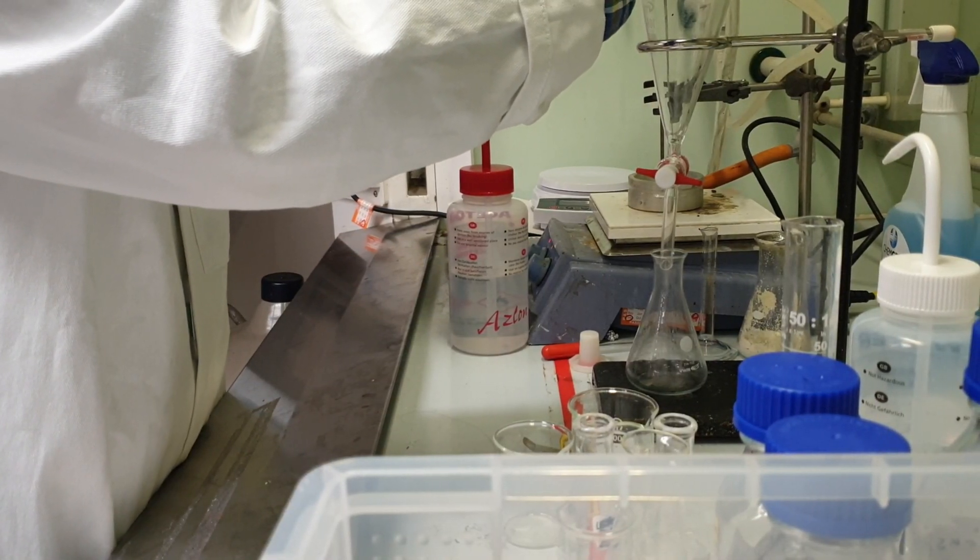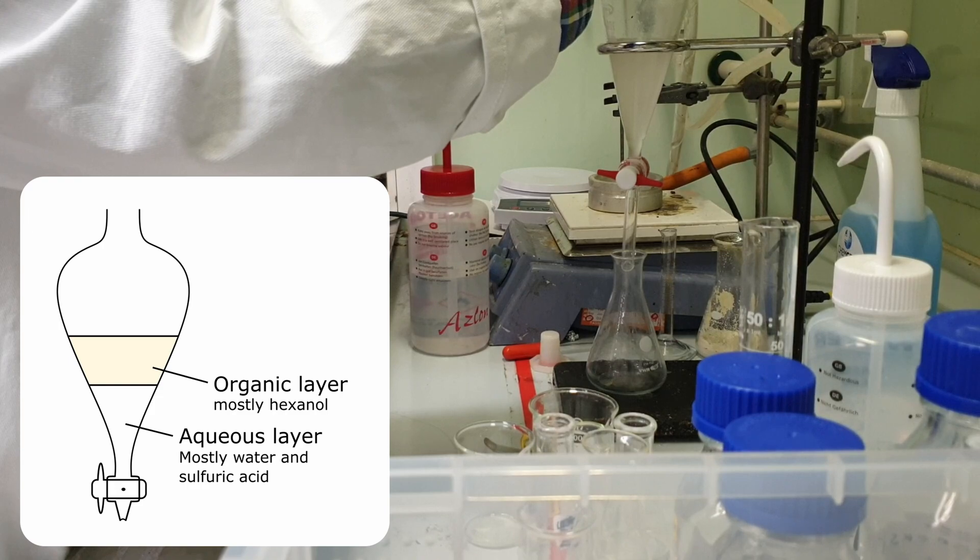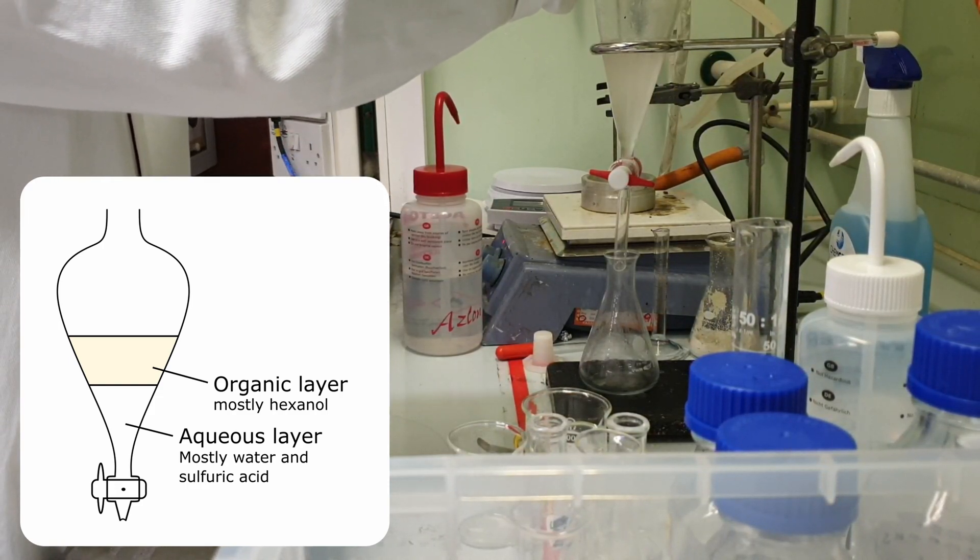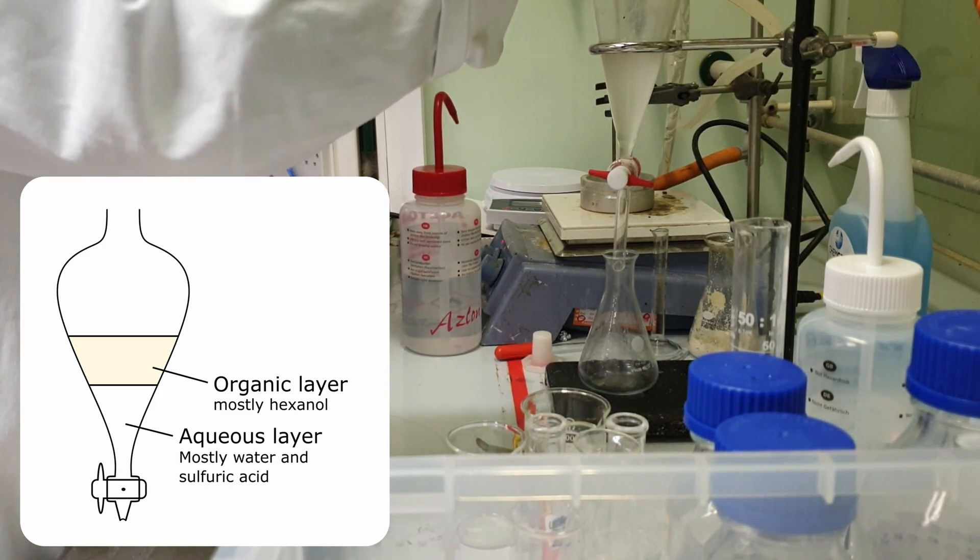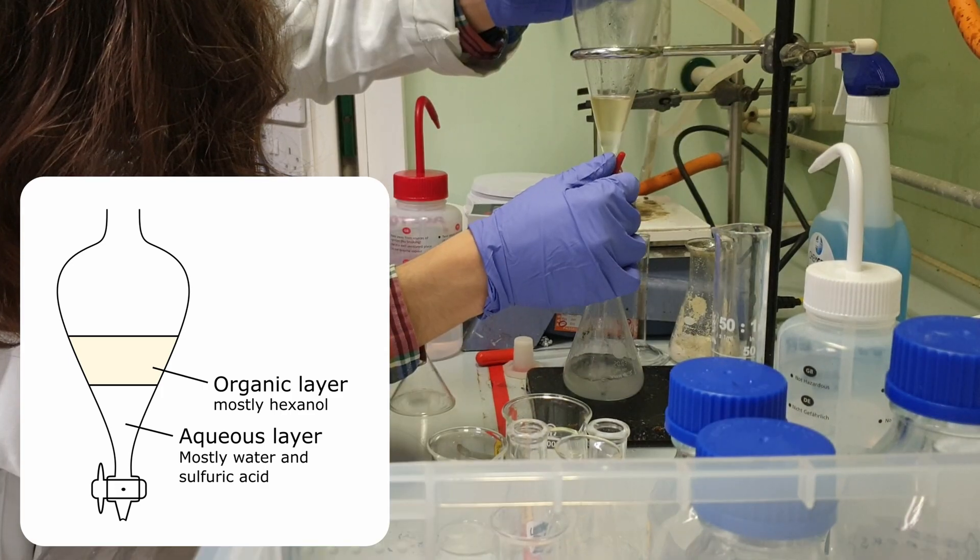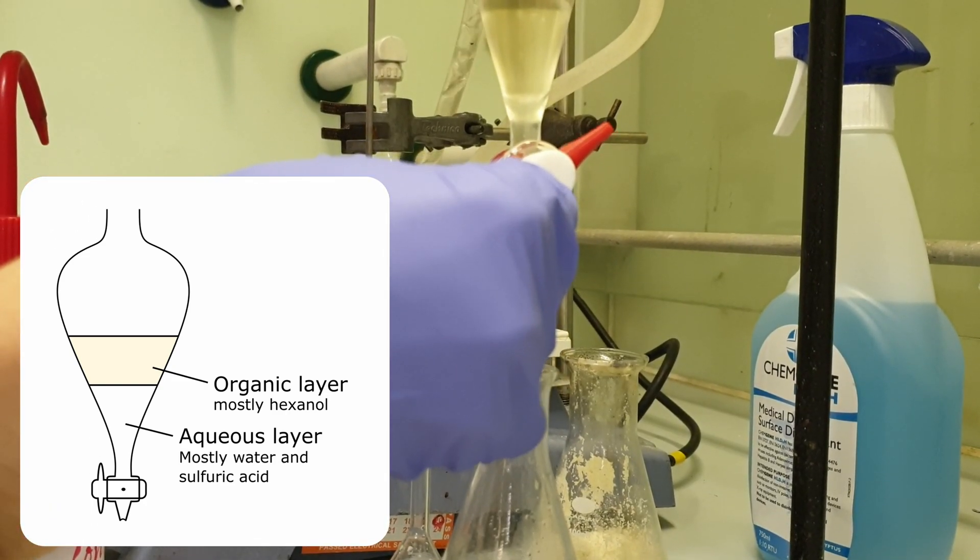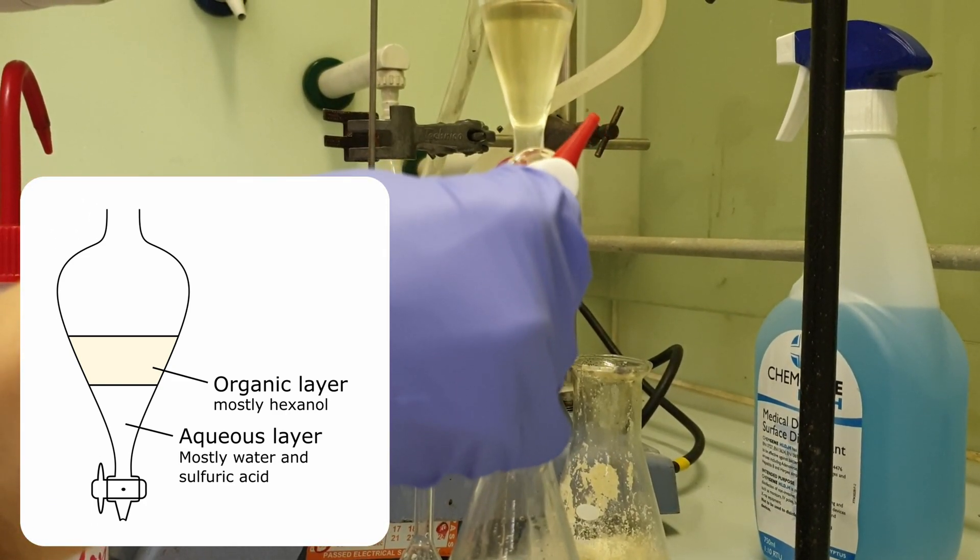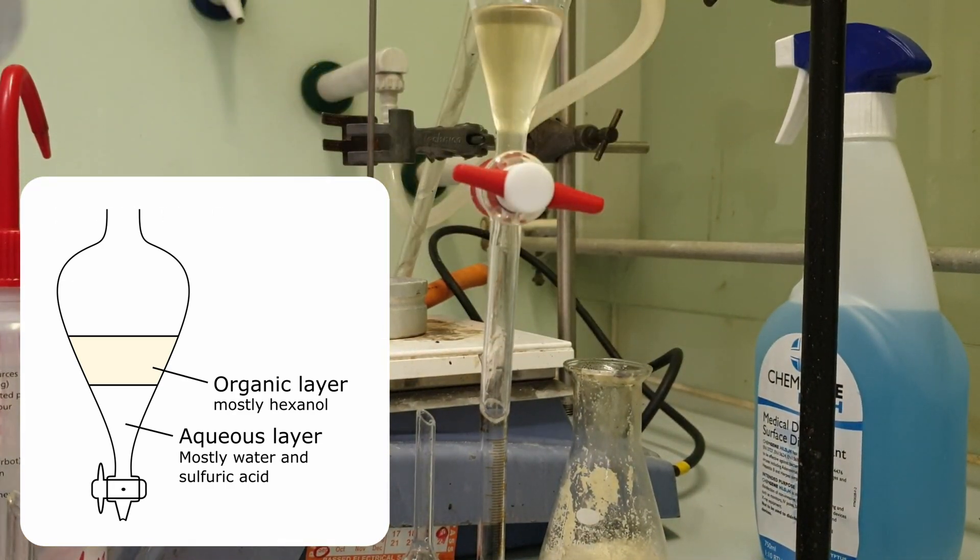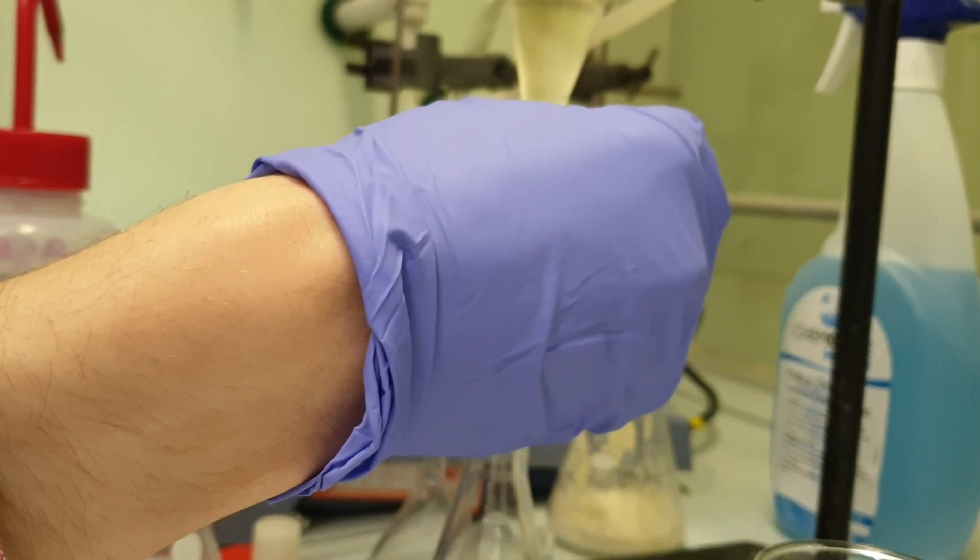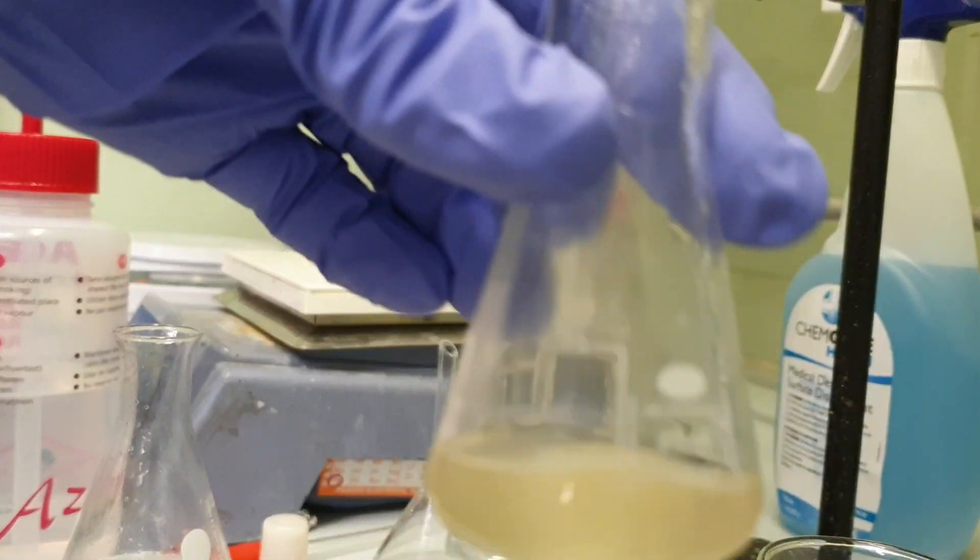Now that the reaction finished I'm dispensing it into a separatory funnel. I'll give it a minute for the layers to separate and then I will drain off the aqueous layer into the conical flask and label it accordingly. Here is my aqueous layer. I'm going to carry out some extraction on this with the ether. Here I'm draining off my organic layer into a separate conical flask.